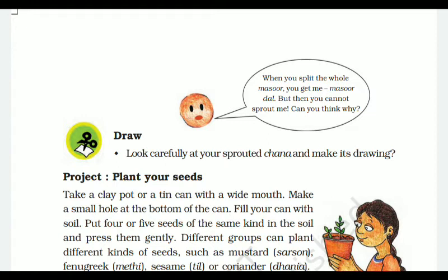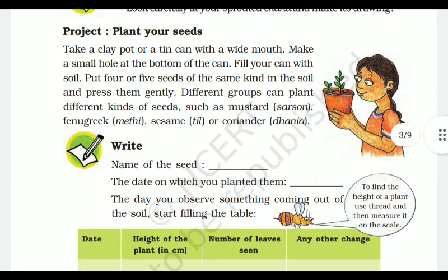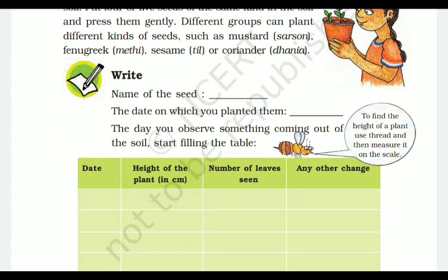Next is the project: Plant your seeds. Take a clay pot or a tin can with a wide mouth. Make a small hole at the bottom. Fill the can with soil and put four or five seeds of the same kind in the soil and place them gently. Different groups can plant different kinds of seeds — for example, mustard, fenugreek, sesame, or coriander.